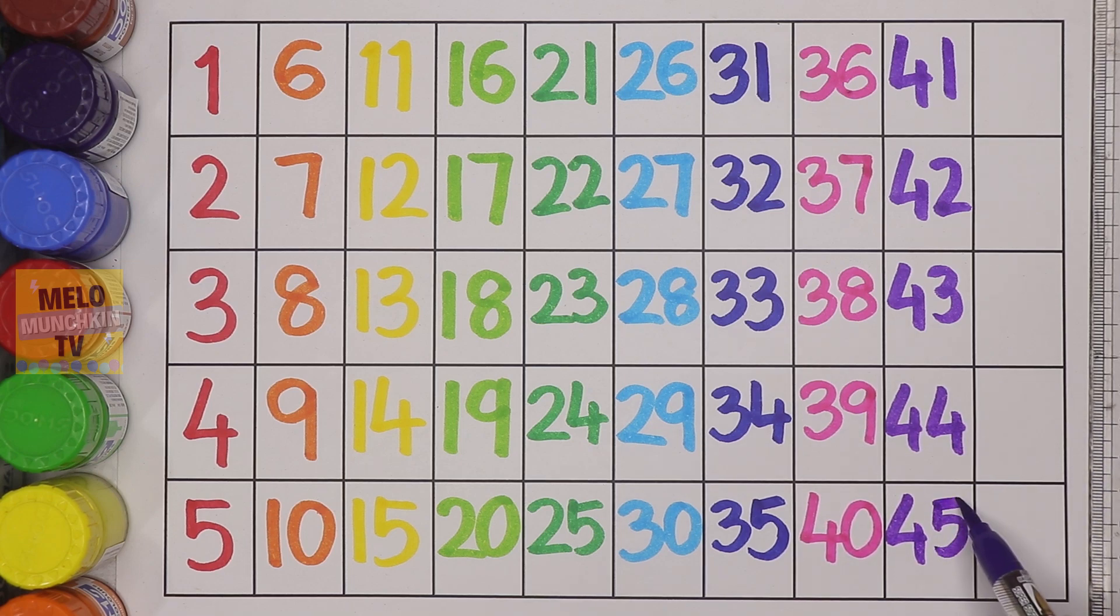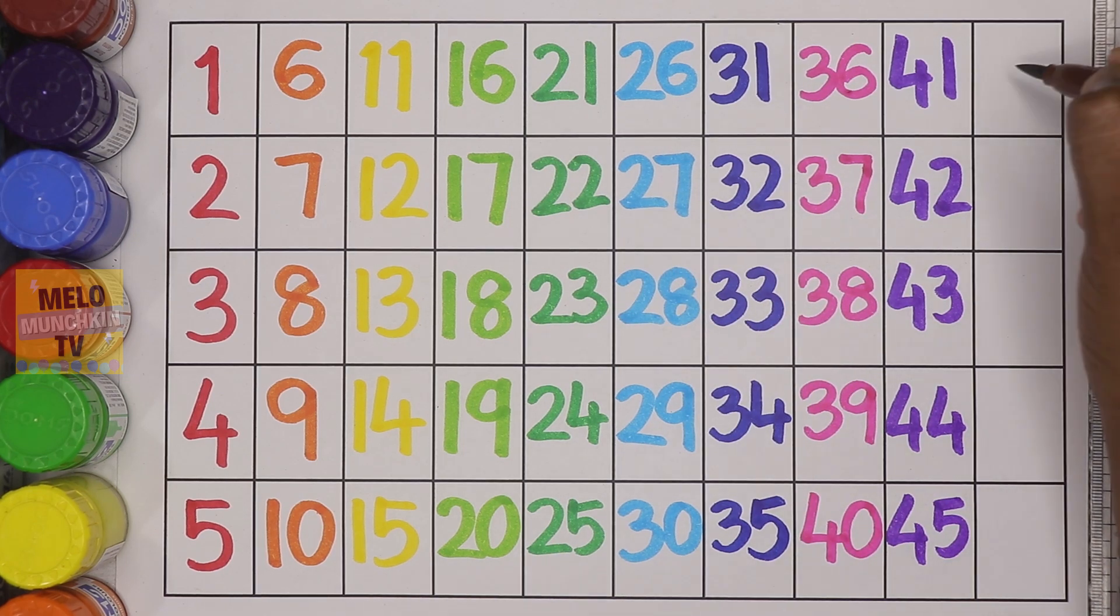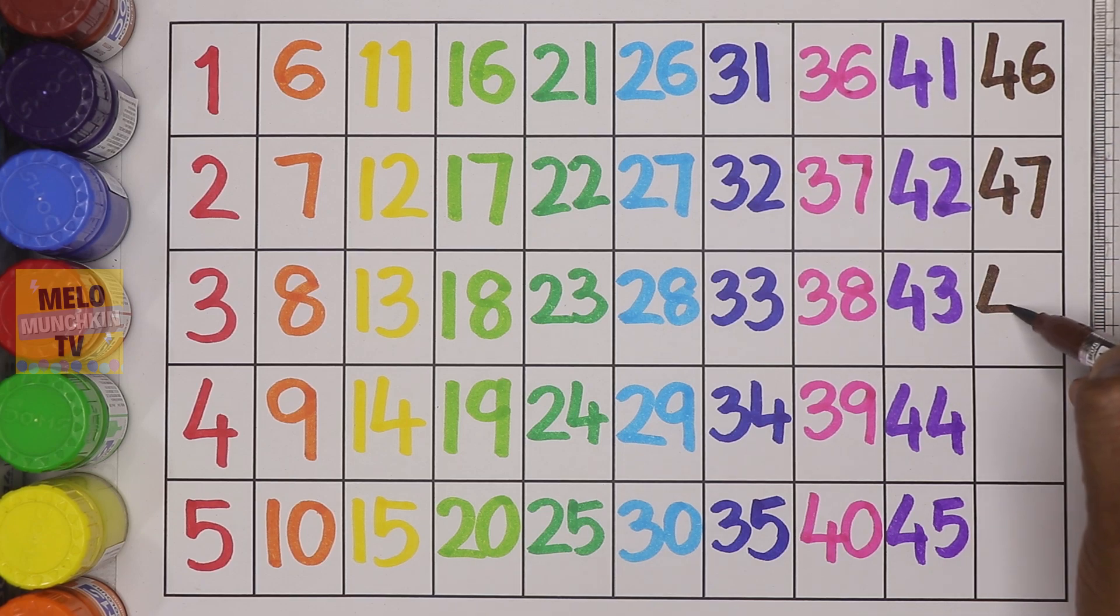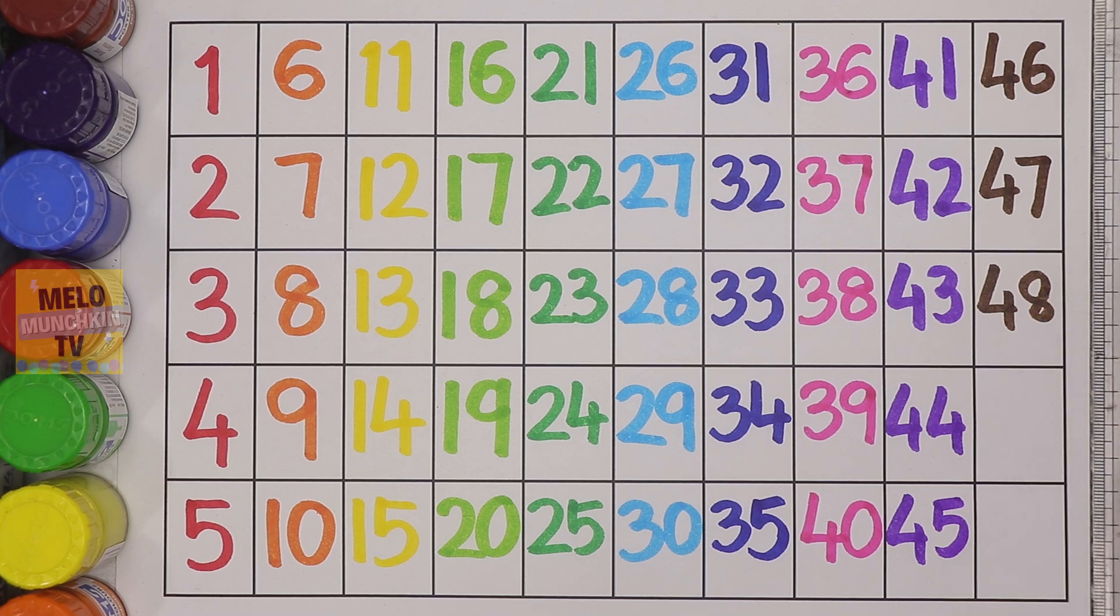forty-five. And for the final line I'll take brown color. So after forty-five: forty-six, forty-seven, forty-eight, forty-nine